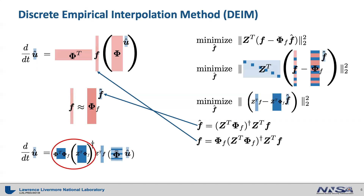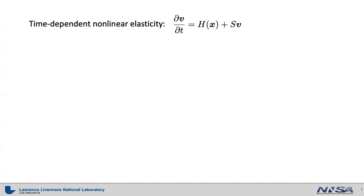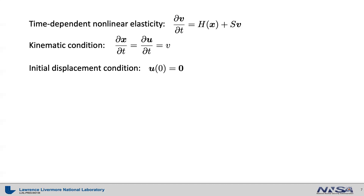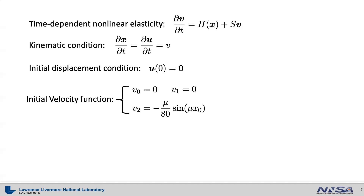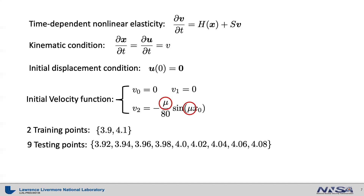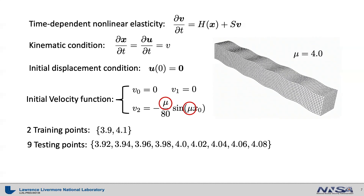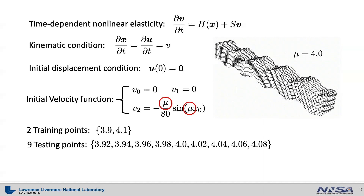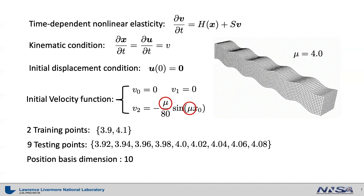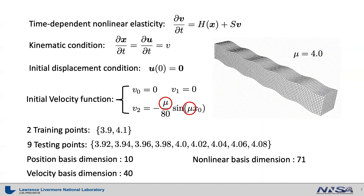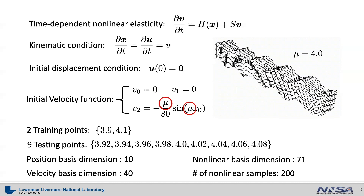We have applied the reduced order model approach to a time-dependent nonlinear elasticity problem. The usual kinematic condition relating displacement and velocity is used. Initial displacement is set to zero, and the initial velocity function V is defined so that sinusoidal up-and-down motion is induced. We set our parameters to be the frequency and amplitude of the sine function for the initial velocity condition. We used two training points — 3.9 and 4.1 — and tried to predict the solution for nine different parameter points. We used 10 position reduced basis vectors, 40 velocity reduced basis vectors, and 71 nonlinear reduced basis vectors, with 200 sample points for the DEIM method.